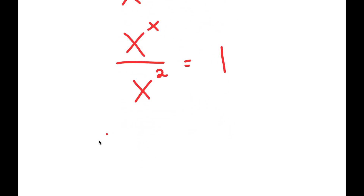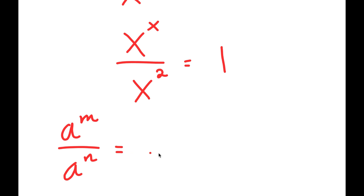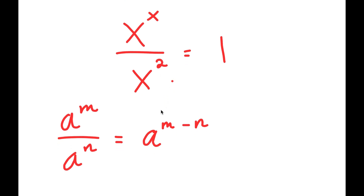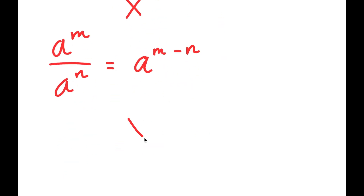Now, from here, if I have something in the form a to the power of m over a to the power of n, this is equal to a to the power of m minus n. So x to the power of x over x to the power of 2 is going to equal x to the power of x minus 2, which is equal to 1.